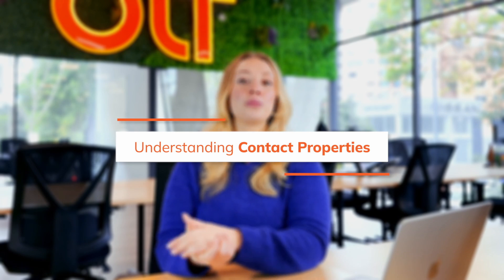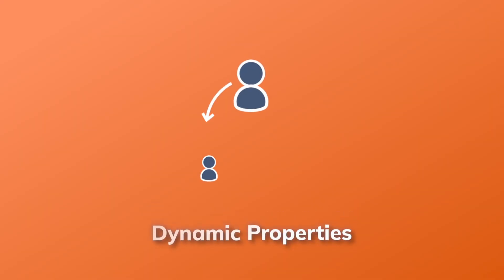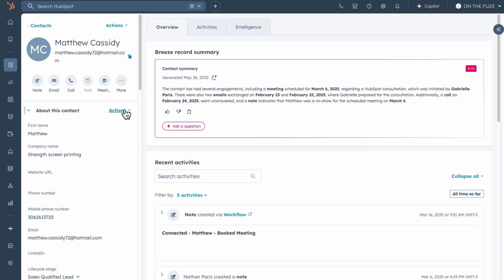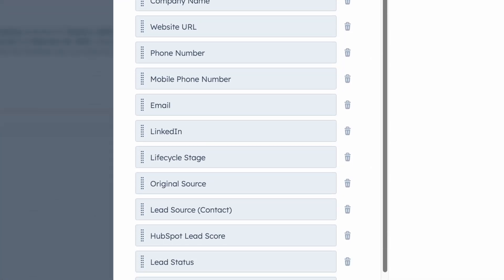Next, we're diving into contact properties. Properties are like individual details about each person in your database. HubSpot comes with default properties like email, name, company, and phone. There are also dynamic properties that update automatically as contacts interact with your business — some examples are lifecycle stage, email engagement metrics, or website visit history.